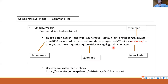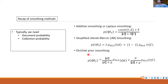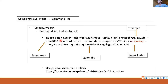Galago has some command line tools to help us do it — we don't need to implement it by ourselves. This is the format of the command line. As you can see, we need to specify the stemmer, and we need to specify some parameters. For example, if we use the Dirichlet method, we have to set mu — this mu parameter — so we have to specify it in the command line.